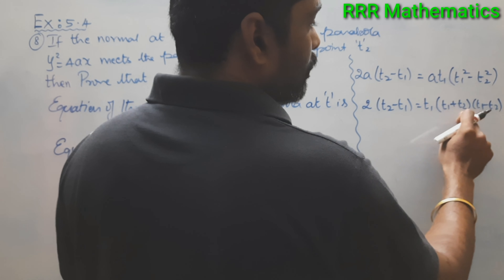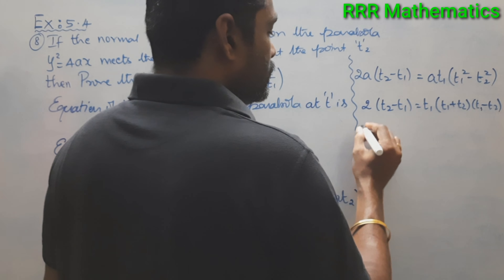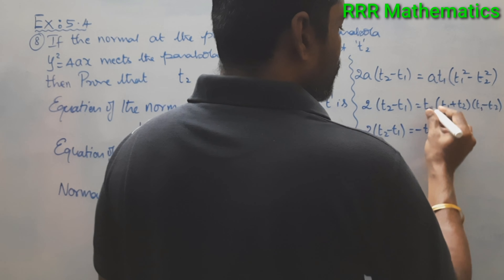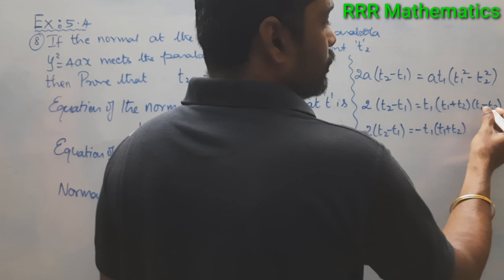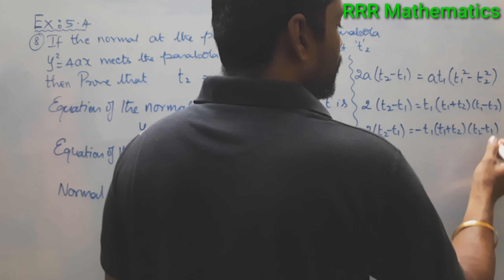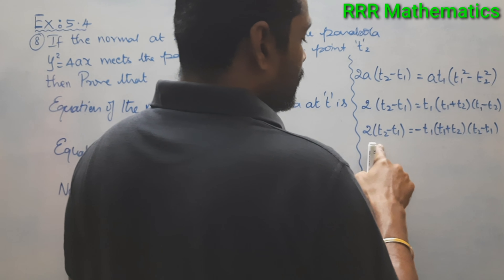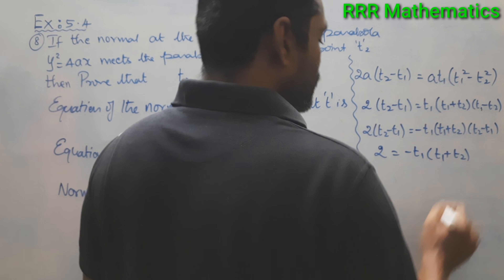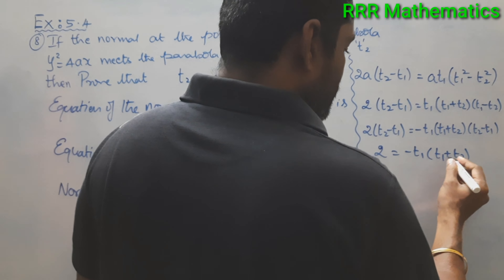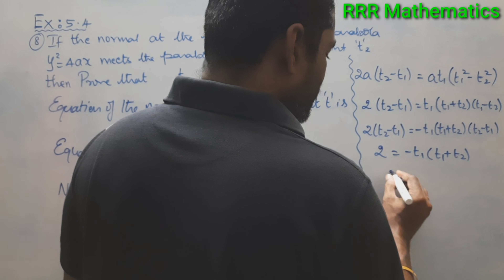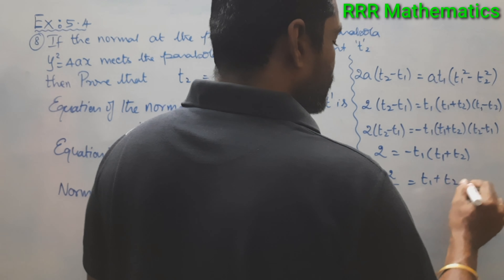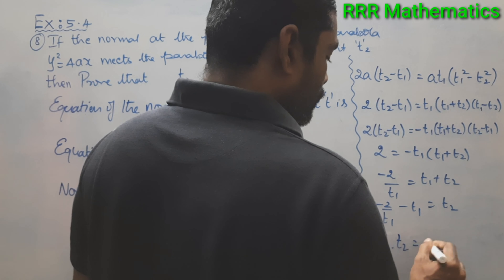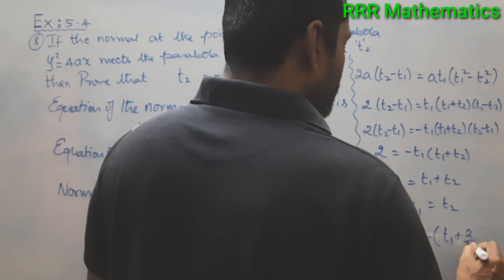Taking minus common from (t1 - t2) gives -(t2 - t1). So (t2 - t1) cancels from both sides, leaving: 2 = -t1·(t1 + t2). Bringing minus t1 to the left side: -2/t1 = t1 + t2. Therefore t2 = -2/t1 - t1, and taking minus common: t2 = -(t1 + 2/t1).